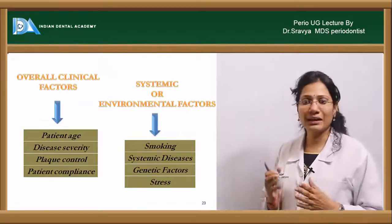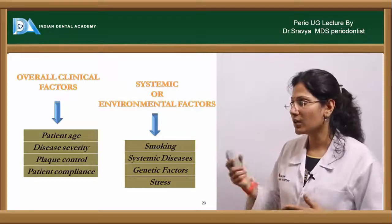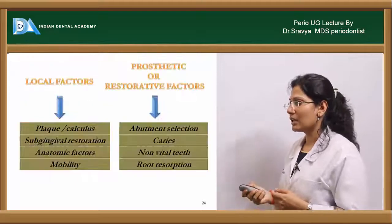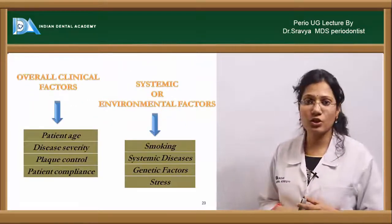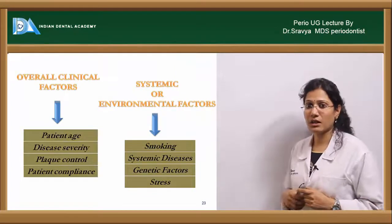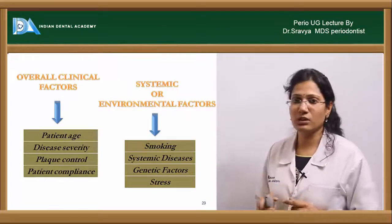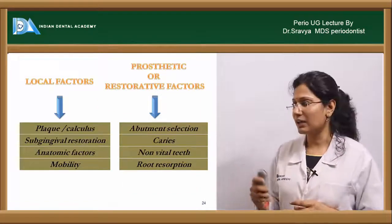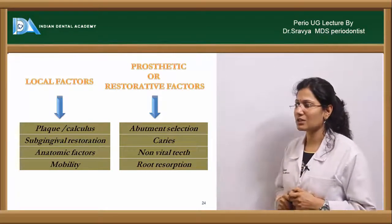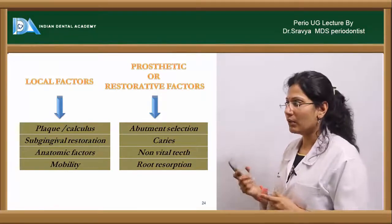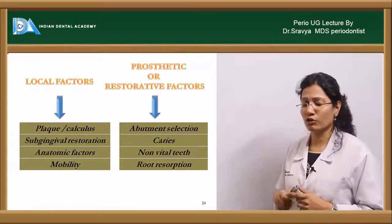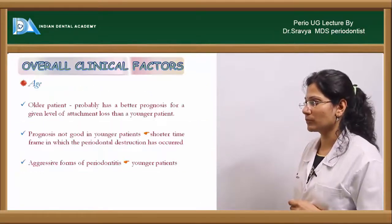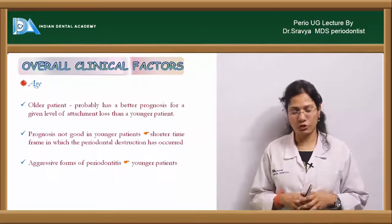You can categorize the overall factors as overall clinical factors, overall systemic and environmental factors, local factors, and prosthetic and restorative factors. The overall clinical factors are patient's age, disease severity, plaque control, and patient compliance. Systemic or environmental factors include smoking, systemic diseases, genetic factors, and stress. Local factors are plaque and calculus, subgingival restorations, anatomic factors, and mobility. The prosthetic or restorative factors for overall prognosis include abutment selection, caries, non-vital teeth, and root resorption.